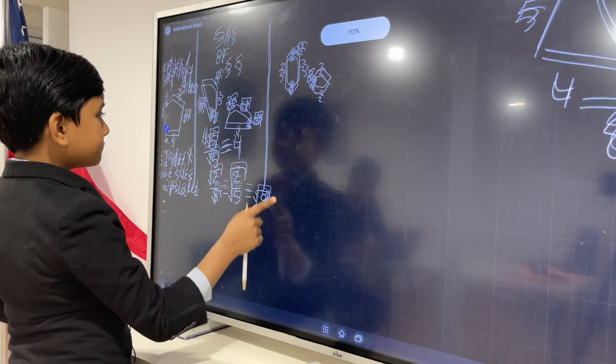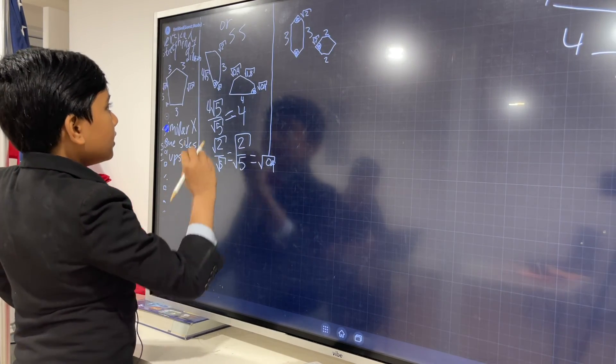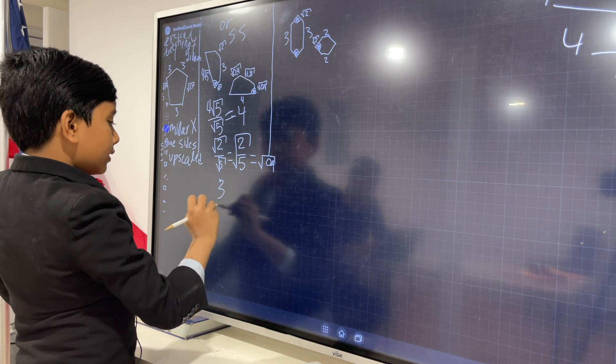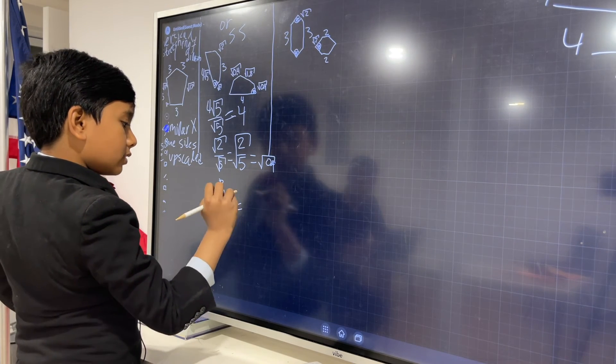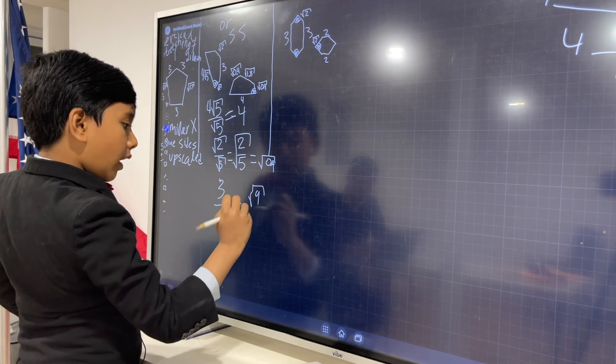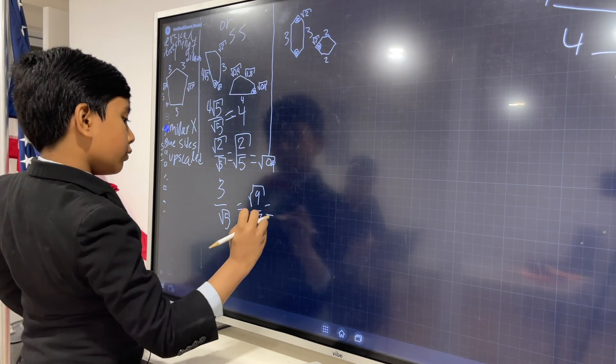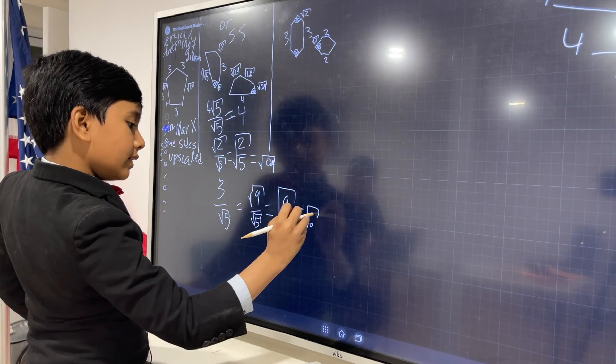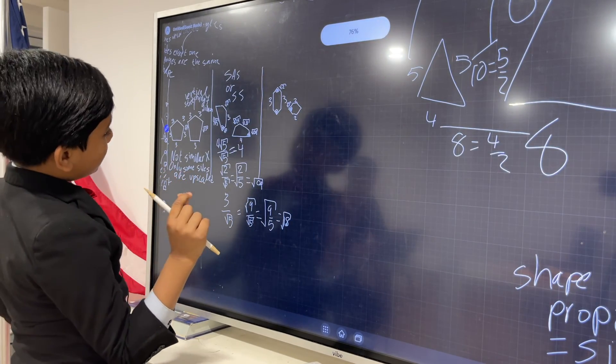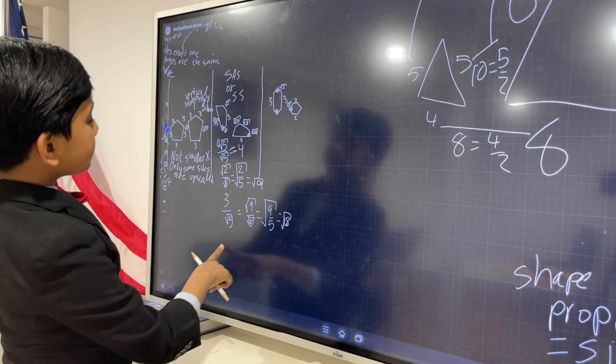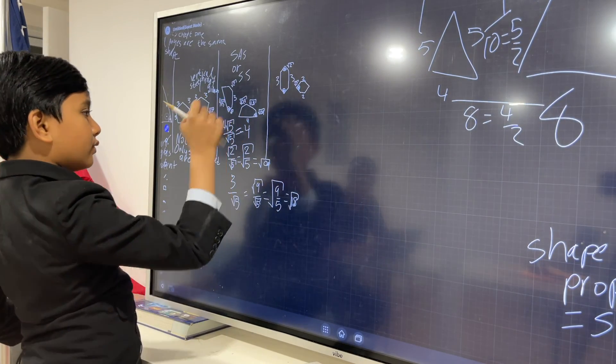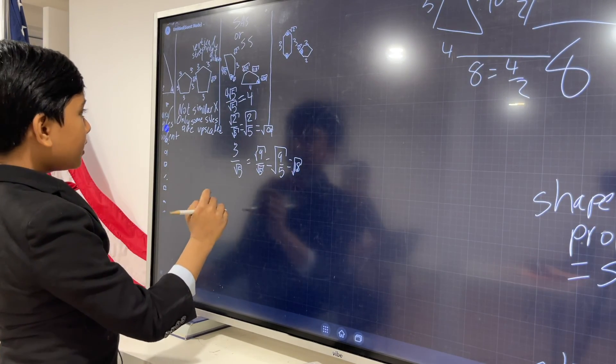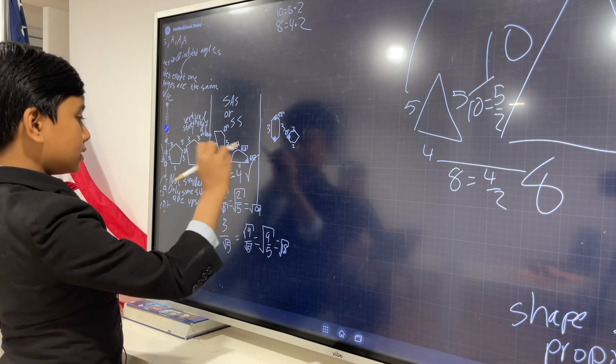So if we take 3 and divide it by root 5, that gives us root 9 over root 5, or root 9 over 5, which is root 1.8. Yes, I designed this to be intentionally tricky. So the same process repeats for this side, and we realize that these two are similar.